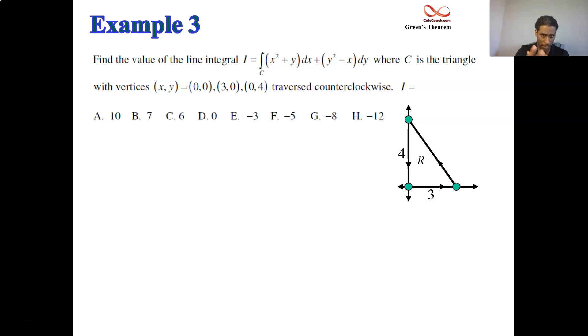But with p being x squared plus y and q being y squared minus x, qx is negative 1, py is 1. So when you go to subtract qx minus py, you get a negative 2. We can employ Green's theorem, put that negative 2 inside of a double integral, and the double integral is over the interior region, which happens to be a nice triangle.